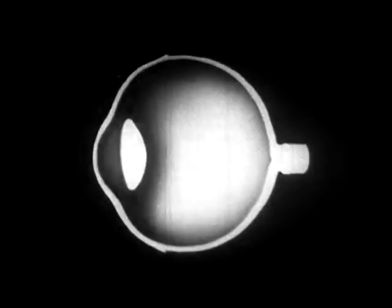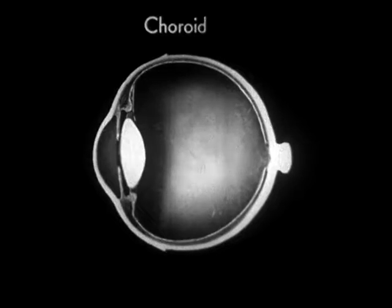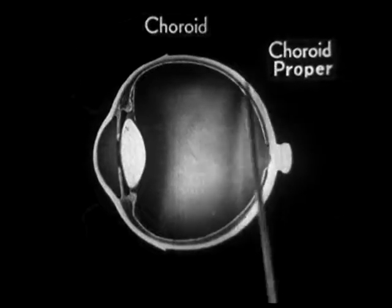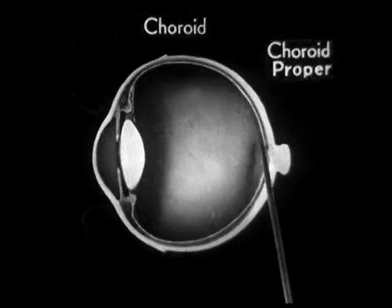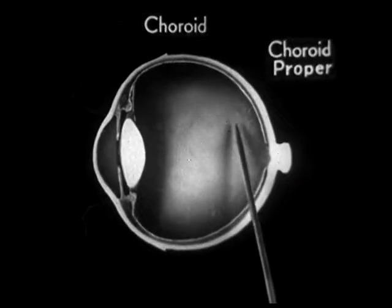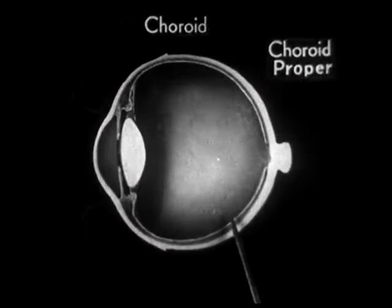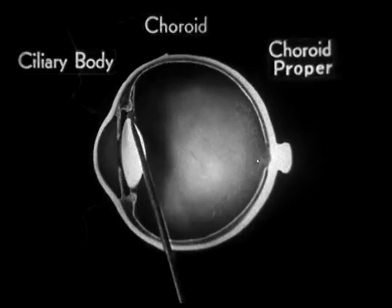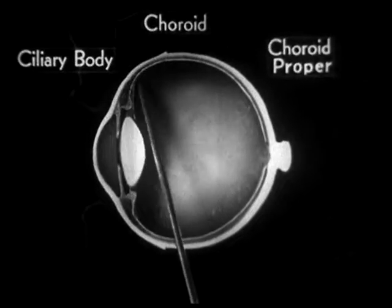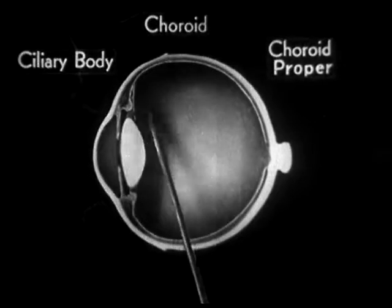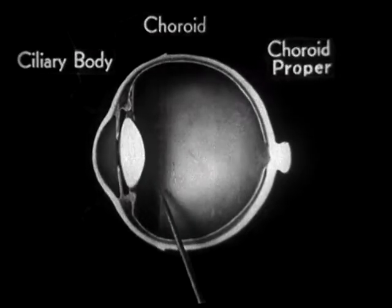The second layer is called the choroid. It consists of three different belts or zones. The first zone is called the choroid proper and is the part that carries nourishment to the tissues of the eye. The next zone is called the ciliary body — a broad ring-shaped band of thin muscle fibers which play a very active and vital part in the visual adjustment of the eye.